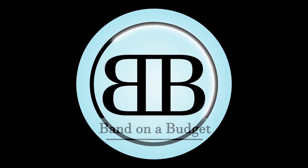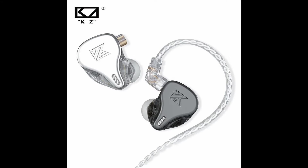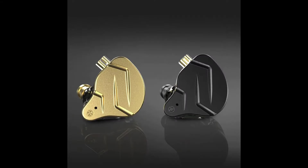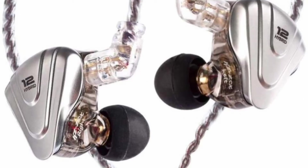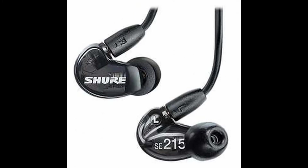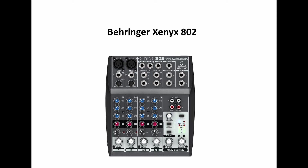Welcome to Band on a Budget. Today we're going to do something a little bit different - I'm going to show you two different ways to set up backing tracks and click tracks into your in-ear monitors or headphones for a live performance. We're going to be using two different kinds of equipment: the Behringer MicroMon MA400 and the Behringer Xenix 802. Feel free to use any other types of preamps and mixers that you like.